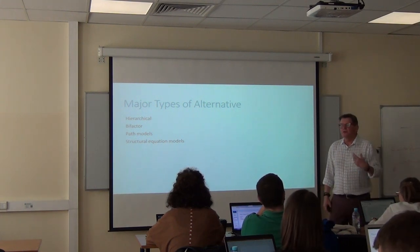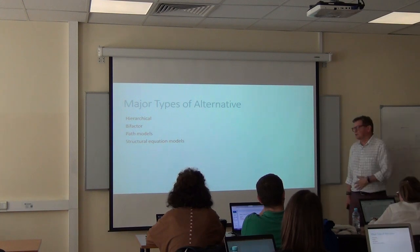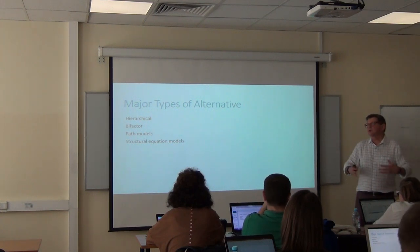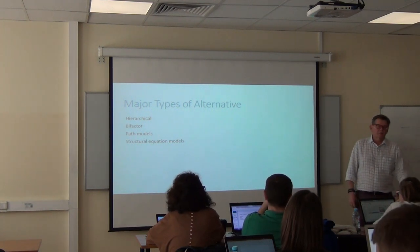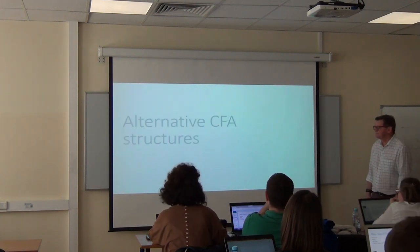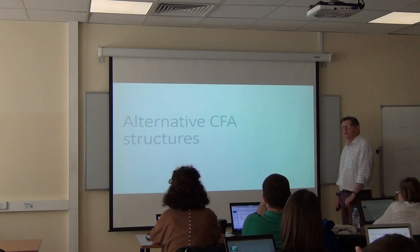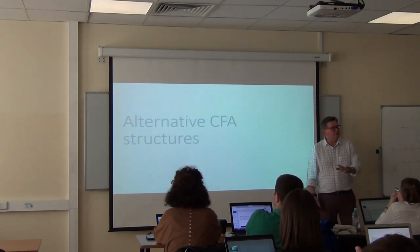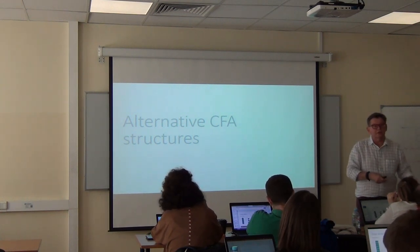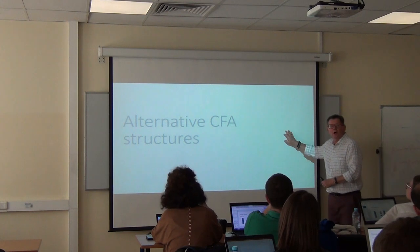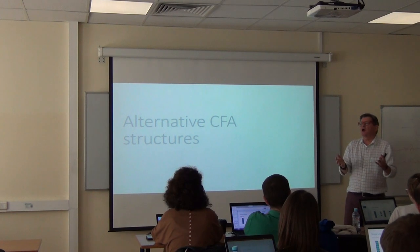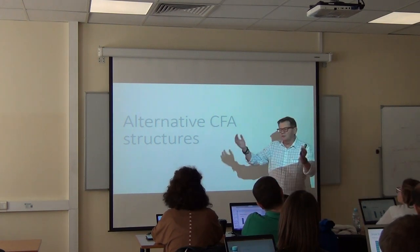Hierarchical and bi-factor are different types of factor structures besides correlated factors. Path models are attempts to show causation using manifest variables, and structural equation models are path models with full factorial structures. These are alternatives to the correlated model — we're still only looking at the measurement model: how am I going to measure my construct?